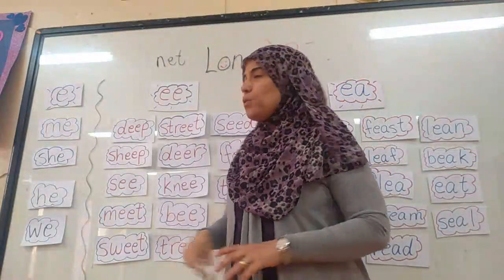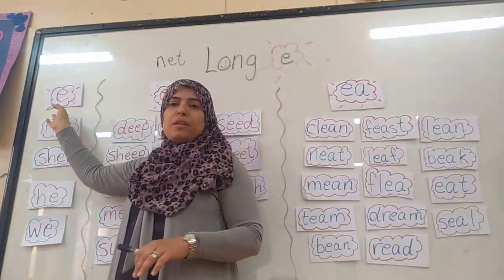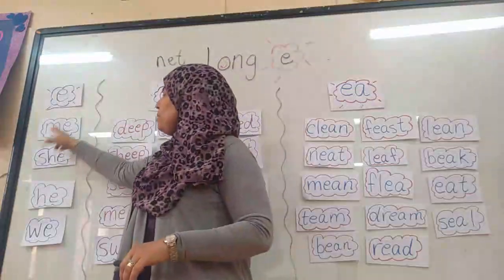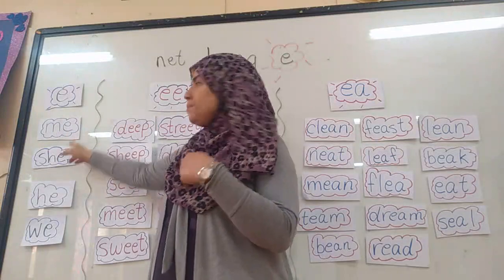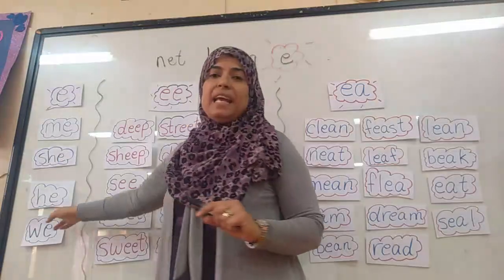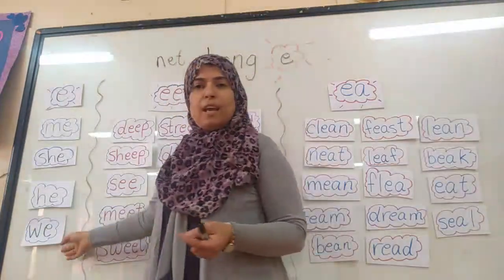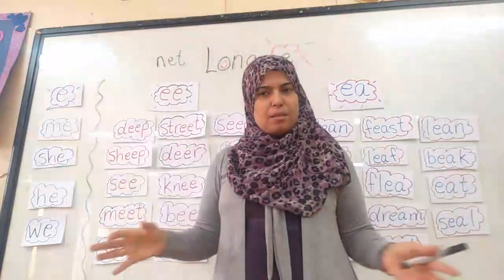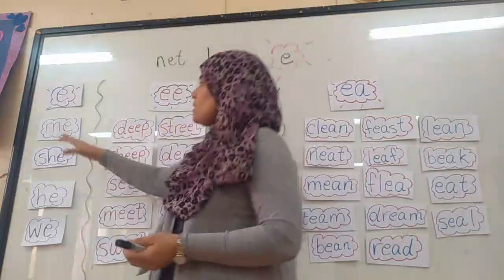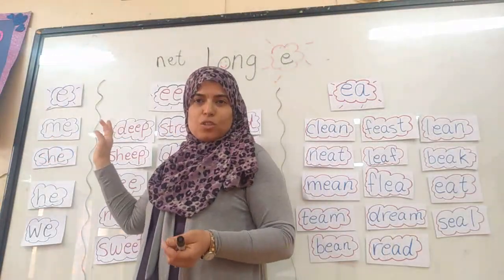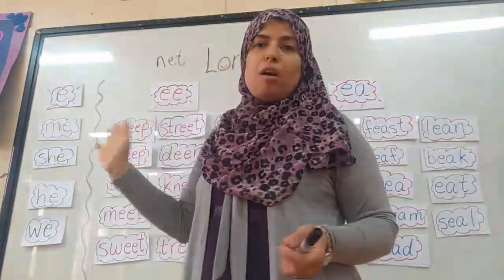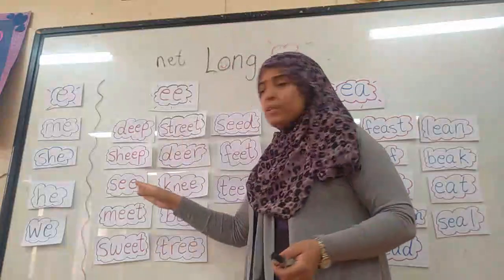Let's read the words. When E comes by itself at the end of the word without a vowel, I read it as: me, she — when talking about a girl — he — when talking about a boy — we — when talking about us, you and me together. So I don't say 'meh', I say 'me'. When you find that E comes by itself in the word, it's long E, and there's no other vowel.